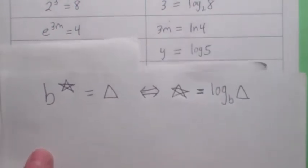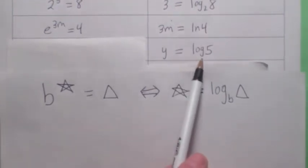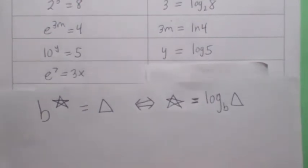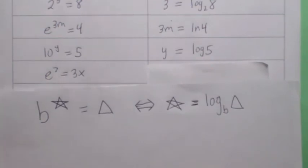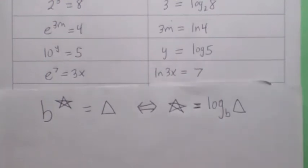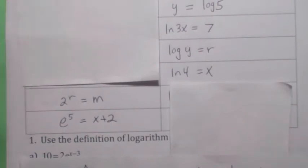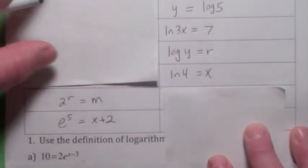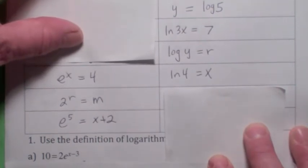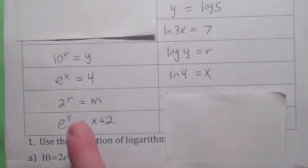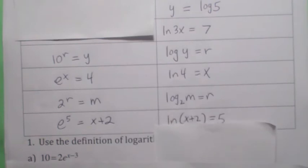This log equation y equals log base 10 of 5 — where star is y, b is 10, and triangle is 5 — would be written as 10 to the y equals 5. This exponential equation with base e, where star is 7 and triangle is 3x, could be written as ln of 3x equals 7. Now try these four on your own. The answers: ln of 4 equals x could be written as e to the x equals 4. Log base 10 of y equals r could be written as 10 to the r equals y. 2 to the r equals m could be written as log base 2 of m equals r. And e to the fifth equals x plus 2 could be written as 5 equals natural log of x plus 2.